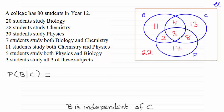But of those 28 students, how many do biology? Well, it's the four and the three here — a total of seven students out of 28 students doing chemistry. So we've got a probability of seven out of 28, and if you reduce this down, it comes to a quarter.